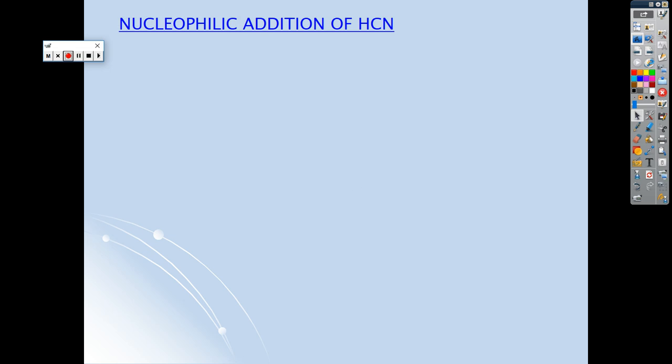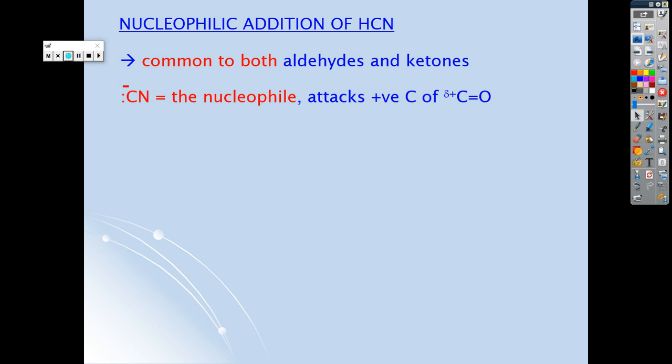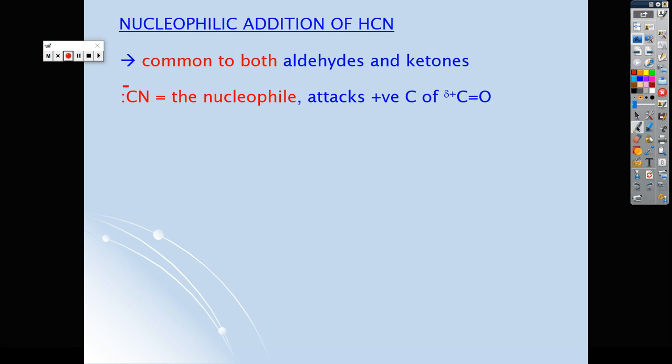Okay, so we're going to have a look at the nucleophilic addition reaction of hydrogen cyanide to a carbonyl compound. The first thing you need to be aware of is that this is common to both aldehydes and ketones. You just change the R group on the aldehyde and the ketone. Learn the general mechanism that we're going to look at. The nucleophile is the cyanide ion from the hydrogen cyanide.